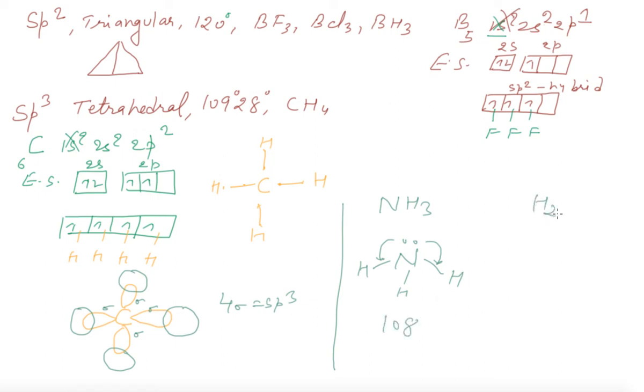Water is also SP³. Two lone pairs are there in the oxygen. This is hydrogen bent shape. One sigma of one lone pair, another sigma of another lone pair, this is sigma, this is sigma. This is SP³ but bent V-shape. Ammonia is also SP³ but it is not tetrahedral due to the presence of lone pair. It is pyramidal.